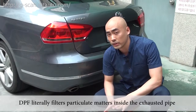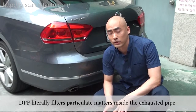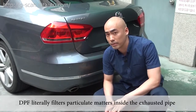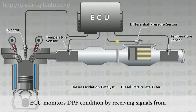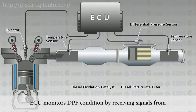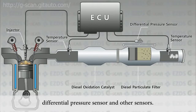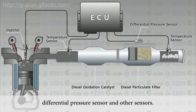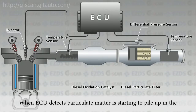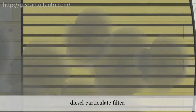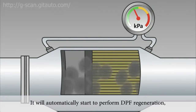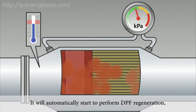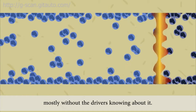DPF literally filters particulate matters inside the exhaust pipe from the diesel engine. The ECU monitors DPF condition by receiving signals from a differential pressure sensor and other sensors. When the ECU detects particulate matter is starting to pile up in the diesel particulate filter, it will automatically start to perform DPF regeneration, mostly without the driver knowing about it.